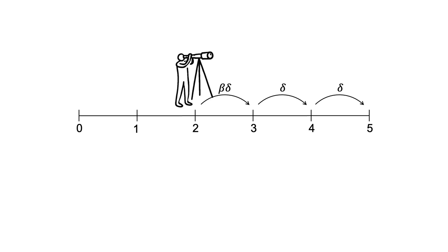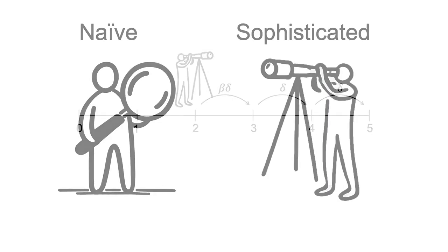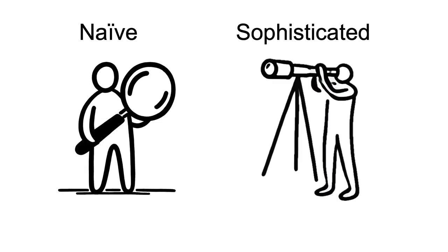They understand that if faced with the temptation to take benefits or to delay costs, they will do so. A sophisticated and naive person can make different decisions despite having the same level of impatience delta and the same level of present bias beta. Any difference emerges in the way that they reason through an intertemporal choice.